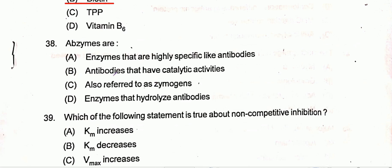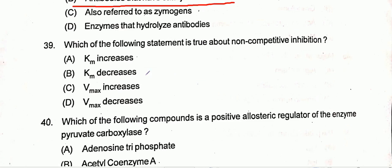Question number 38: Regarding the acetyl-coenzymes — acetyl-coenzymes are antibodies that have catalytic activity. Question number 39: Which of the following statements is true about non-competitive inhibition? For non-competitive inhibition, the Km value is constant and Vmax value decreases. Option D is the correct one — Vmax decreases.